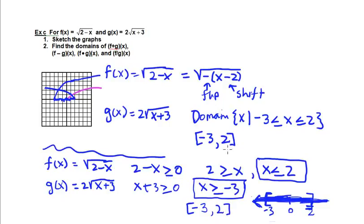We could also express this in set builder notation as the set of x such that x is greater than or equal to negative 3 and less than or equal to positive 2.